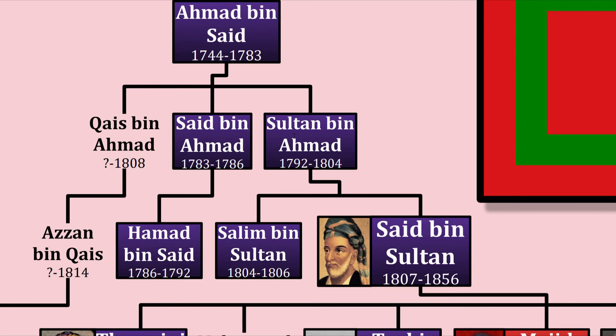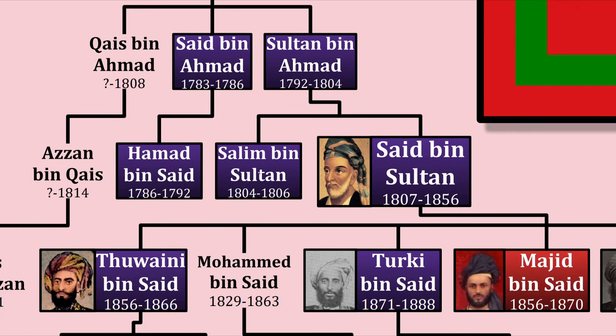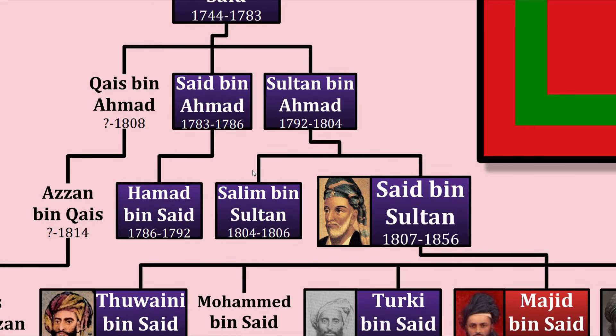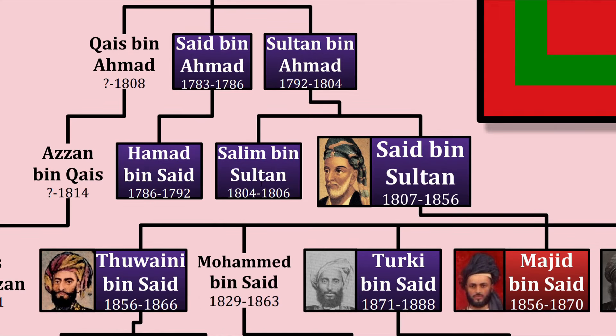Salim didn't last long either, as he had to put down yet another revolt by one of Saeed bin Ahmad's brothers, this time Qais bin Ahmad. He agreed to give up control to his more eager brother, Saeed bin Sultan, who maybe definitely murdered one of their allies. Believe it or not, this is actually where stability comes to Oman. Bin Sultan, known as the Lion of Oman, has widely been considered arguably the greatest leader in Oman's history.